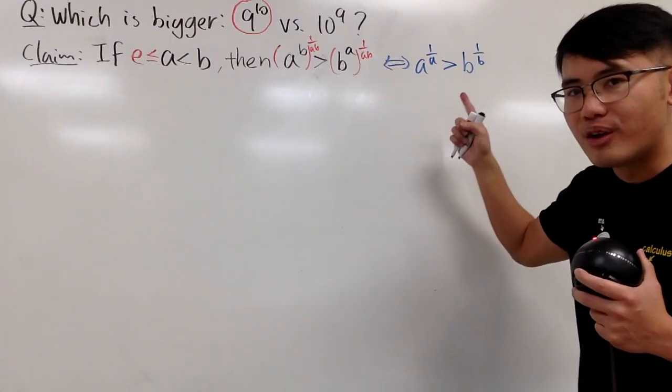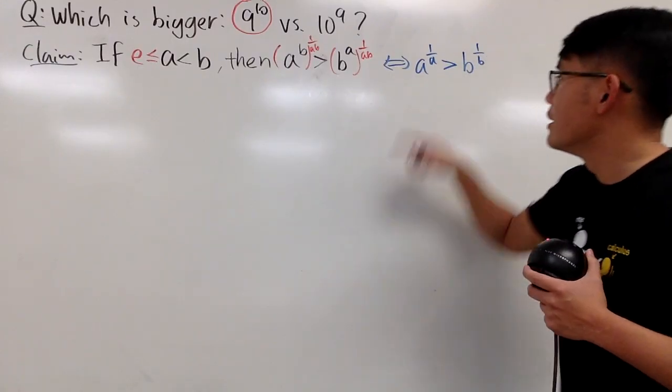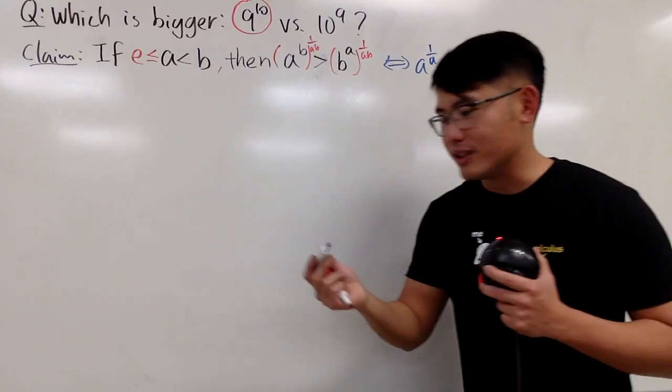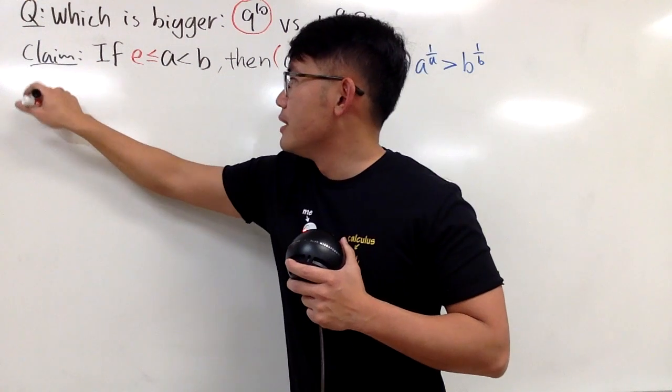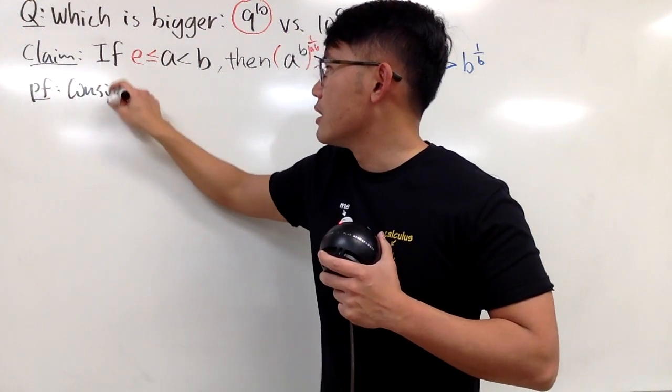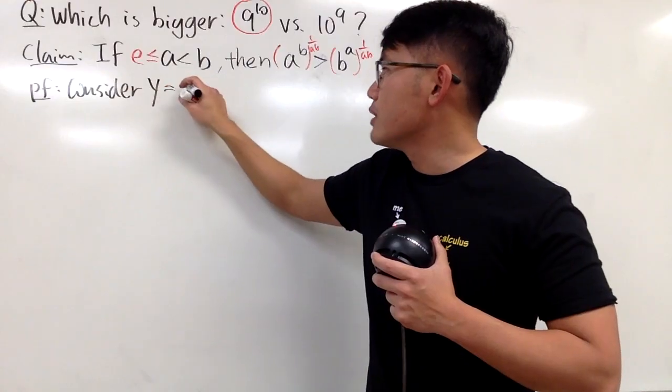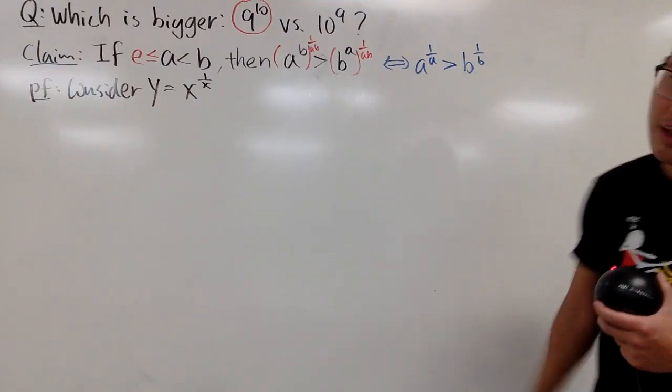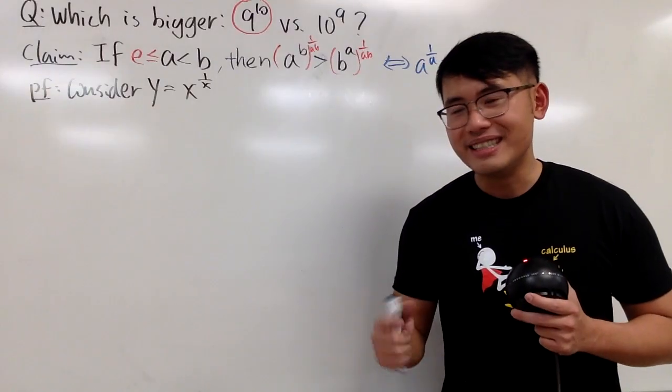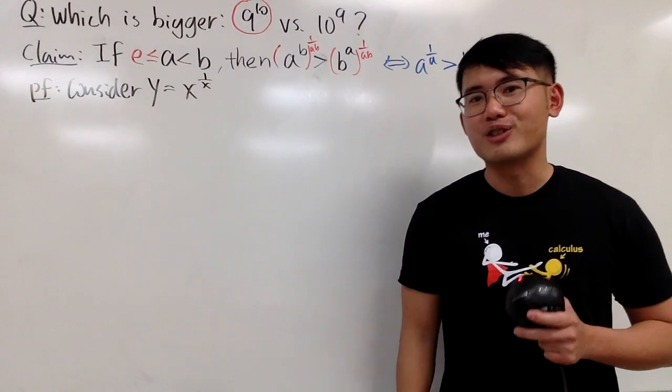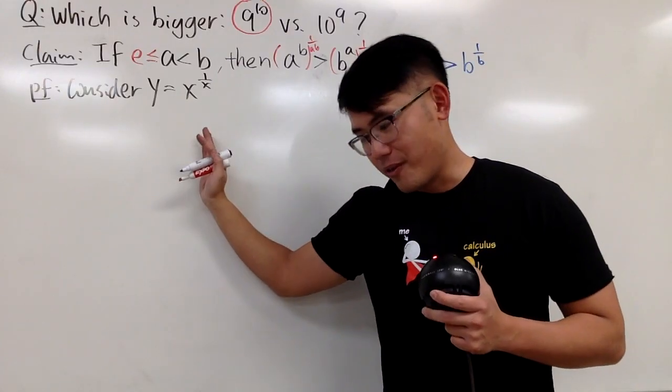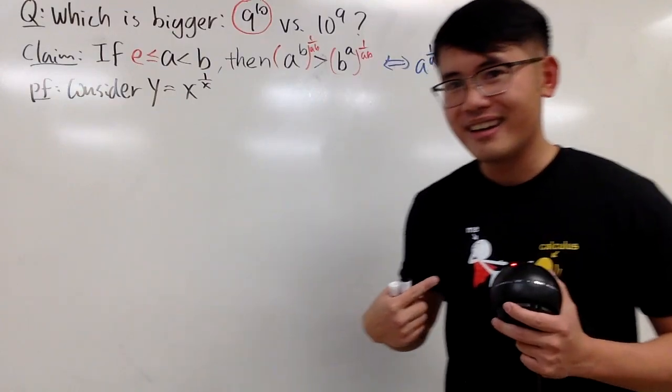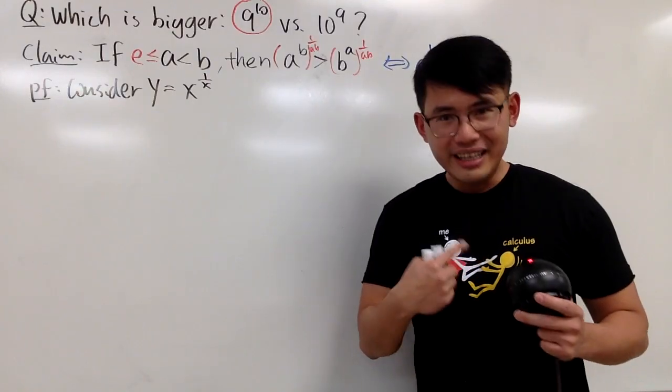And again, you can keep the inequality, and then this will be B to the 1 over B's power. And now, when you have this, you can consider a function where, of course, we'll just take this to be x to the 1 over x power, and we'll make a comparison. So here we go. This is my little proof. I will consider the function to be y equals x to the 1 over x power. And because we're talking about inequalities, why don't we look at the minimum or the extremum of this function?